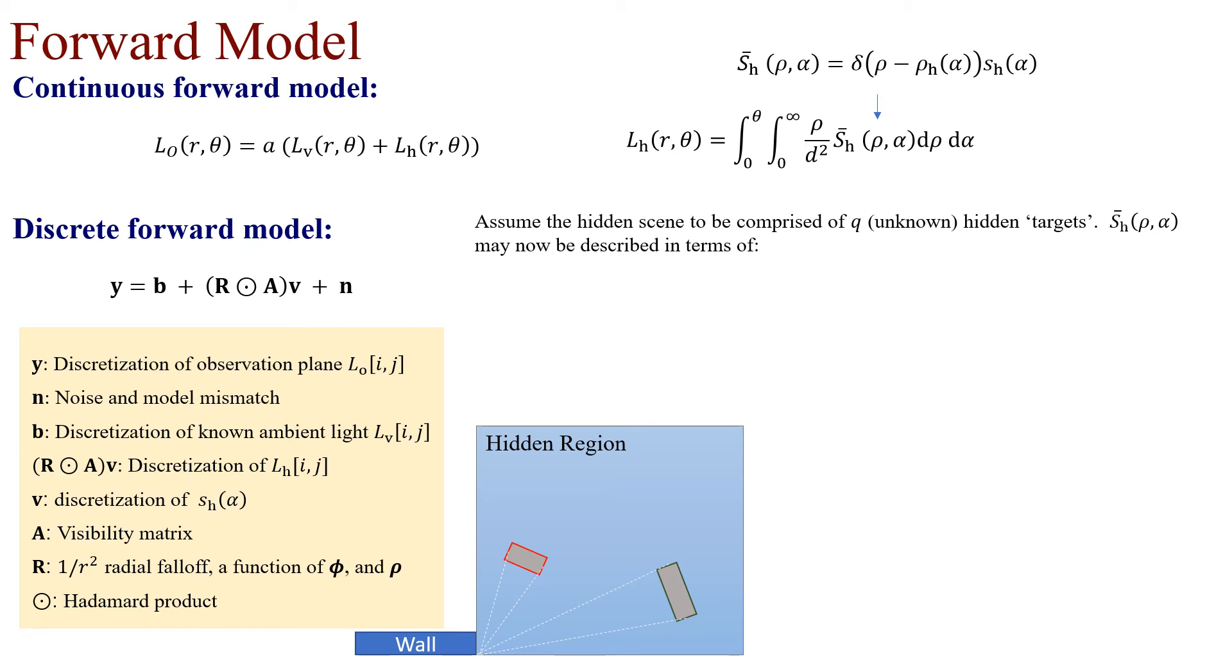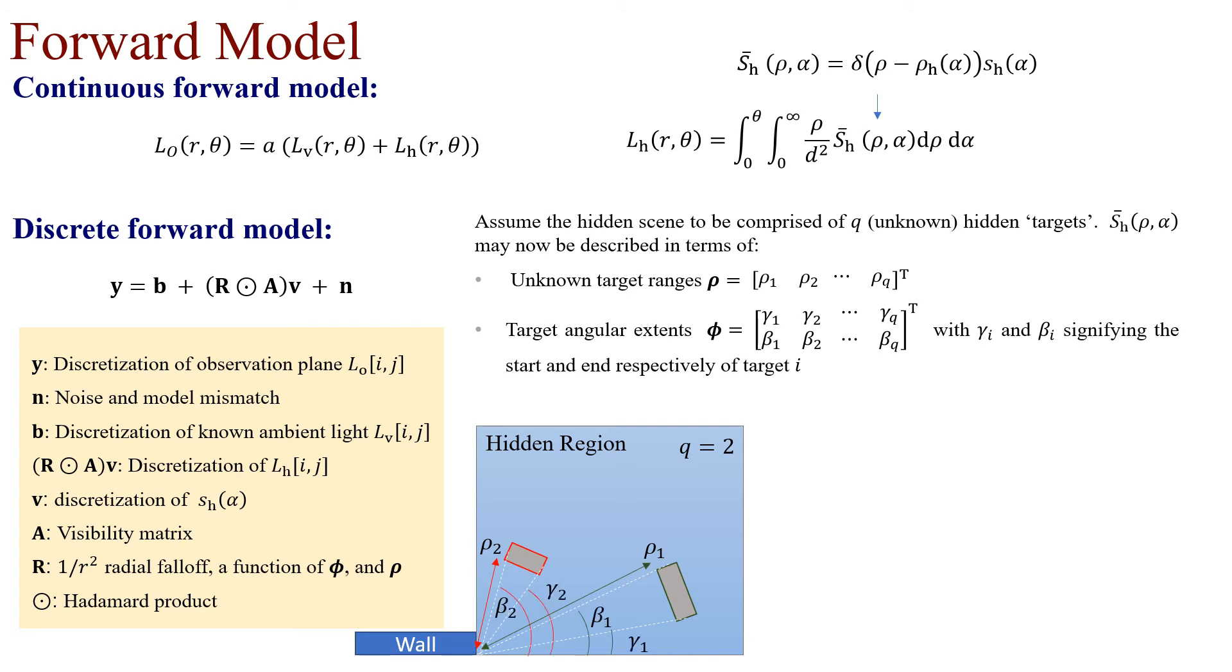For example, in this scene with 2 targets, Q equals 2. SH bar may now be described in terms of Q unknown target ranges, Q target angular extents, and 1D radiosity as a function of angle V.